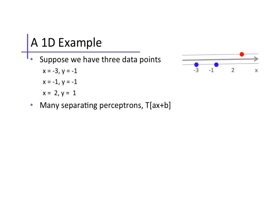Let's see a simple example, small enough that we can plot both the feature and parameter spaces. Let's say we have one scalar feature x and three data points, from the negative class at x equals minus 3 and minus 1, and the positive class at x equals 2. We can see that these data are easily separable. In fact, there are many linear classifiers that will separate them, with different weights a and constant or bias terms b.